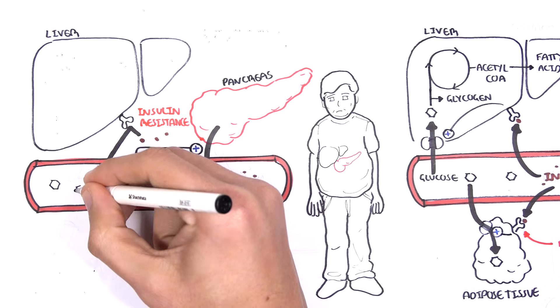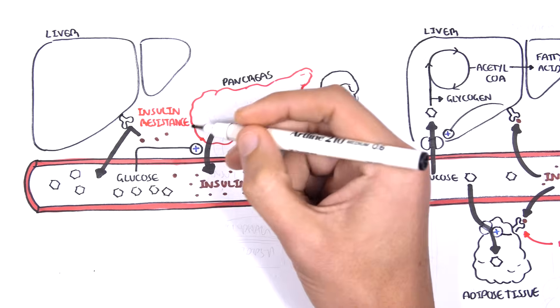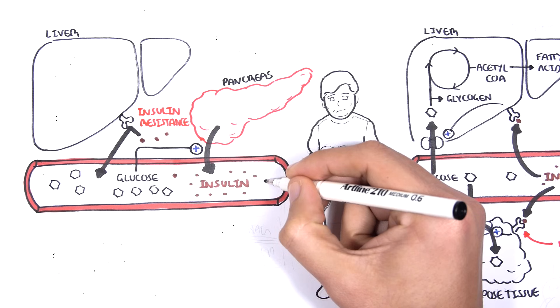And as a result, there will be high blood glucose levels for longer periods of time. Now insulin resistance occurs because of a variety of factors including genetics, family predisposition, bad eating habits and also obesity.